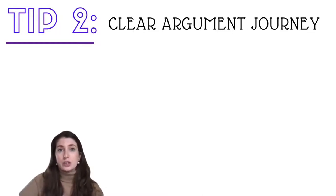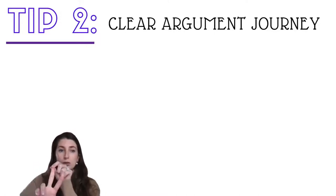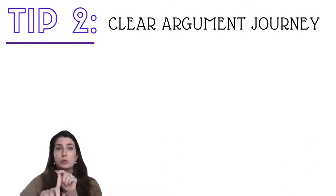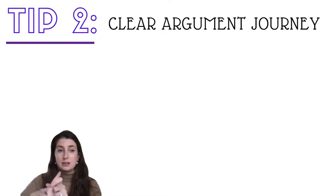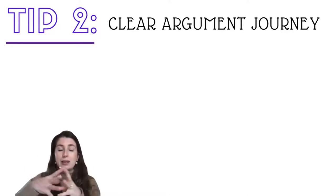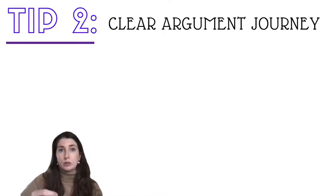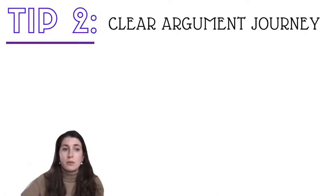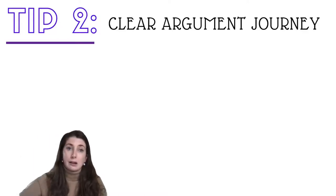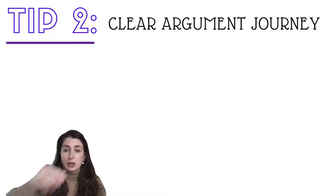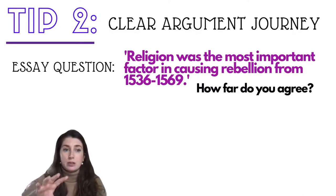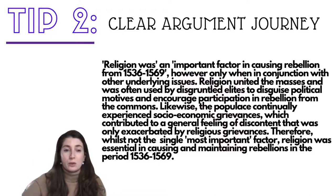If you've watched my video on how to structure A-level essays, I talk about a three-part structure, not including your introduction and conclusion. Paragraph one: agree with the factor in the question. Paragraph two: disagree or present an alternative factor. Paragraph three: show some level of nuance or synthesis, pulling things together to really host that A-star level argument. Within your introduction, you can already set out the outline of that journey. A fluid, clear essay comes from a very clear journey. We're looking at religion as the main factor in causing rebellion over this specific time period, and I've put my introduction back on screen.